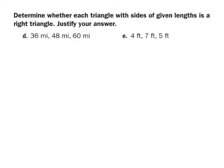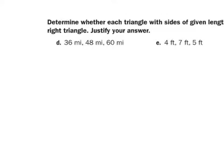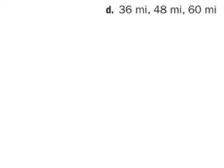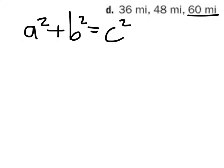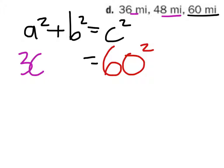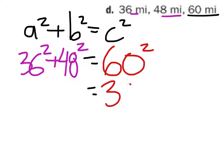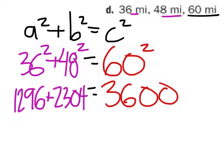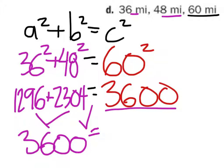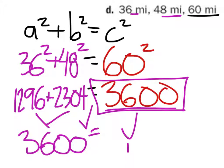Take these three numbers: 36, 48, and 60. Which is the hypotenuse? 60 is the biggest, so it's the hypotenuse. We set up: 36 squared plus 48 squared equals 60 squared. That's 1,296 plus 2,304 equals 3,600. Adding 1,296 and 2,304 gives 3,600, which is exactly 60 squared. So yes, this will make up a right triangle.